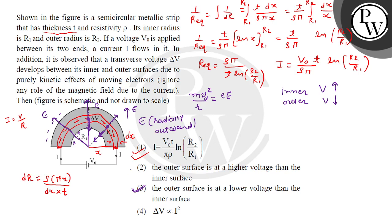Option number two is confirmed. Now let's find the relation between ΔV and I². I will find this out. The equation is I = N·e·A·Vd, where Vd is the drift velocity. Taking E as delta V over the length, we proceed.